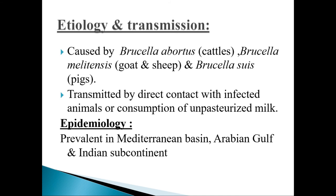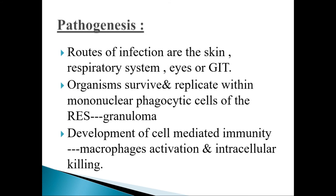Epidemiology: brucellosis is prevalent in the Mediterranean Basin, Arabian Gulf and Indian subcontinent. Pathogenesis: the route of infection can occur through the skin, the respiratory system, eyes or GIT. These organisms can survive and replicate within mononuclear phagocytic cells of the reticuloendothelial system, forming a granuloma. Development of cell-mediated immunity leads to macrophage activation and intracellular killing of Brucella.